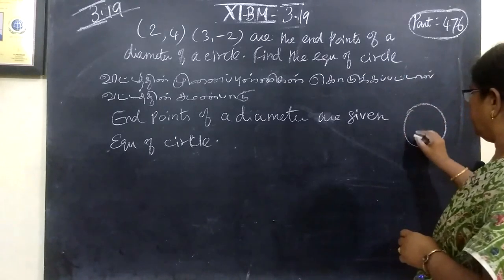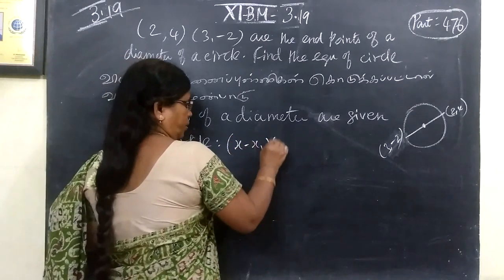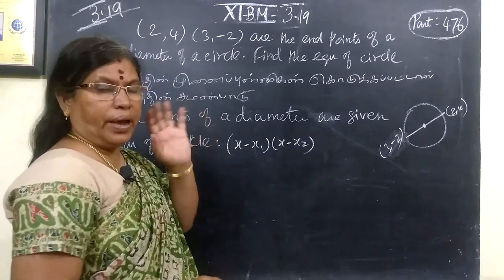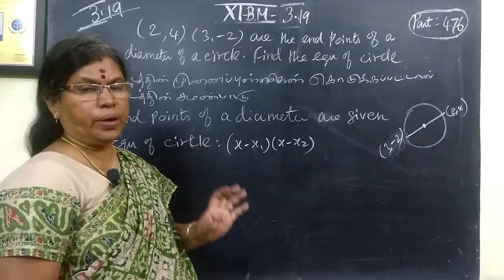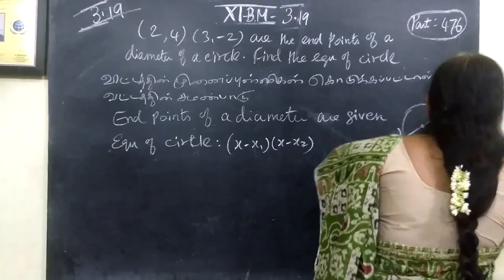Here you are given the circle, this is the diameter, diameter is the end point, so 2,4, this is 3,-2. We want to find the equation of the circle when the end points of the diameter is formed.